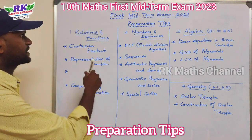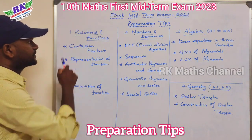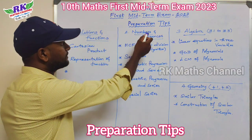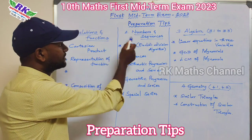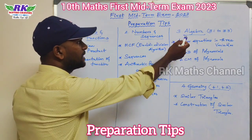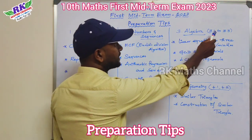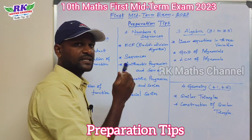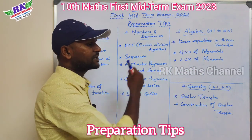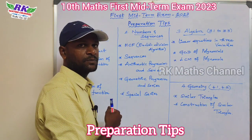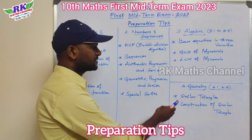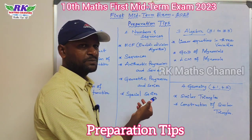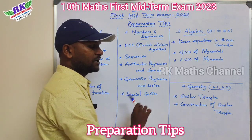First, let me show you the preparation tips. The first unit is Relations and Functions, the second unit is Numbers and Sequence — both chapters are fully covered — and 3.1 to 3.3. The content is 3.1 to 3.3. Geometry covers 4.1 and 4.2, which means introduction and similar triangles.